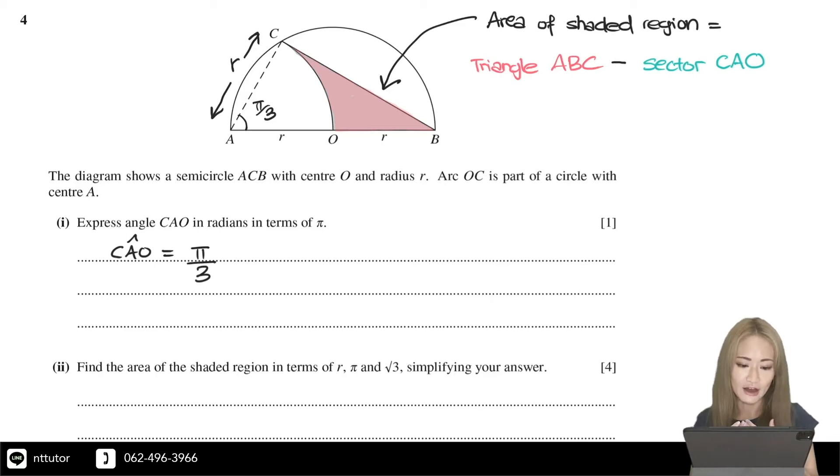we can do base times height divided by 2 or half AB sine C. Since we don't have base and height, but we have the sides AC and AB and the angle in between them, we can use half AB sine C. So that's half of AC times AB sine of angle, sine of angle CAO.